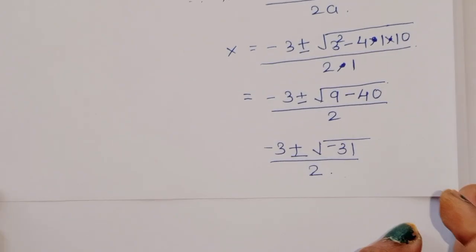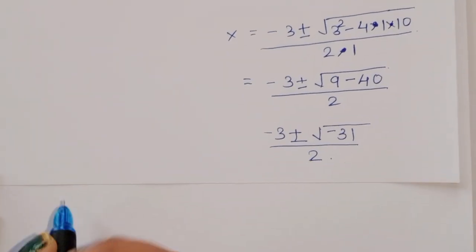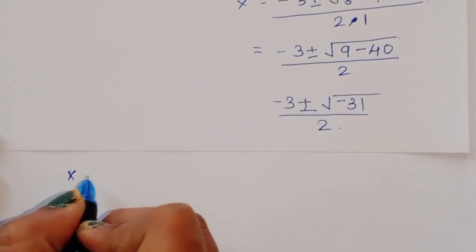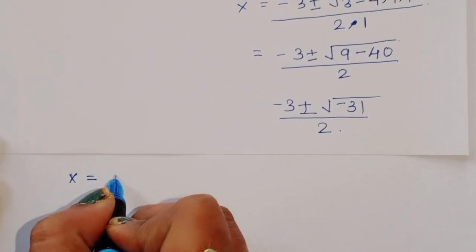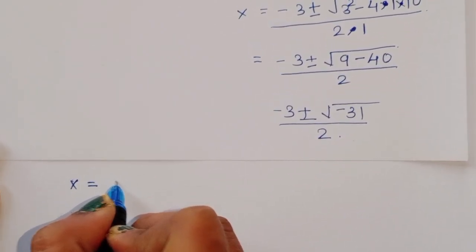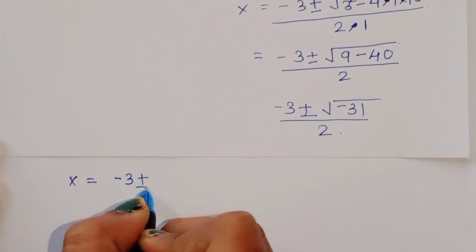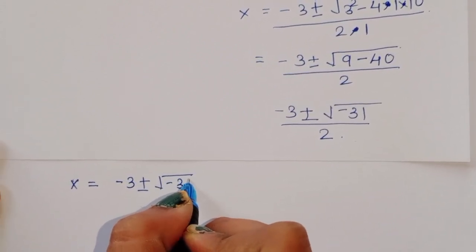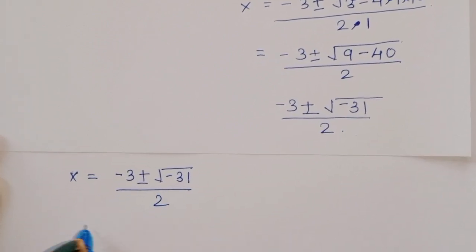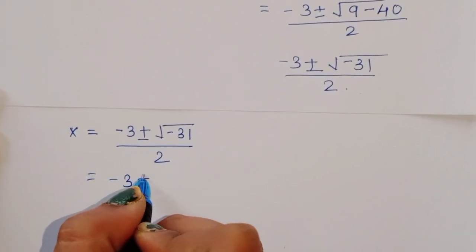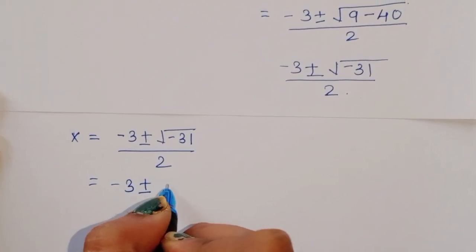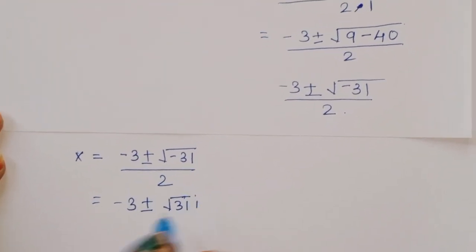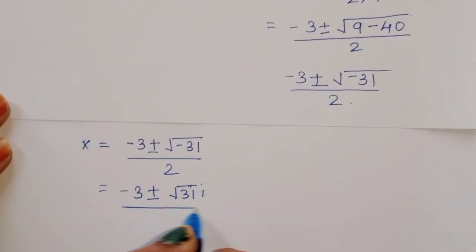We can write √(−31) = √31 × √(−1) = i√31. So x = (−3 ± i√31) / 2.